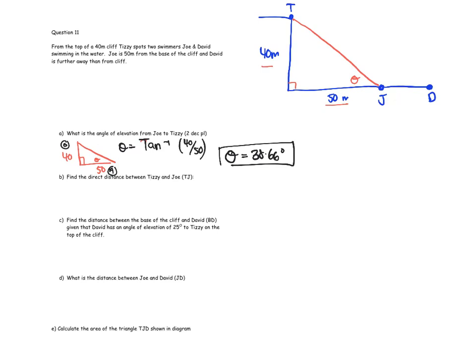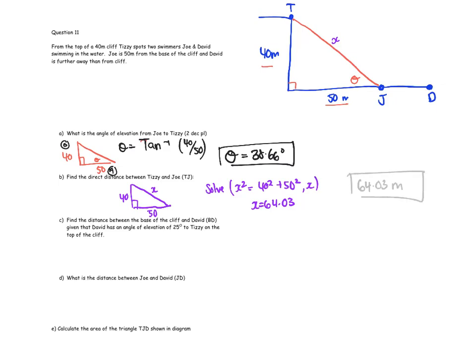Find the direct distance between Tizzy and Joe — that's the hypotenuse of the right angle triangle. Try to always use the data given rather than calculated values, so using 40 and 50: x squared equals 40 squared plus 50 squared. Solving gives x equals 64.03 meters — so the direct distance between Tizzy and Joe is 64.03 meters.